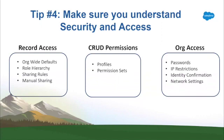You have record access and the four ways to control it: org-wide defaults, role hierarchy, sharing rules, and manual sharing. You've got profiles and permission sets for the create, read, update, and delete permissions — we call those CRUD. And you've got controls on access to the org itself: passwords, IP restrictions, identity confirmation, and network settings. As a Salesforce admin, you've got to know where to look when a user comes to you with an accessibility issue. They're not going to tell you where to look — they'll just say 'I don't see this record' or 'I can't edit this report.' You have to troubleshoot it yourself.